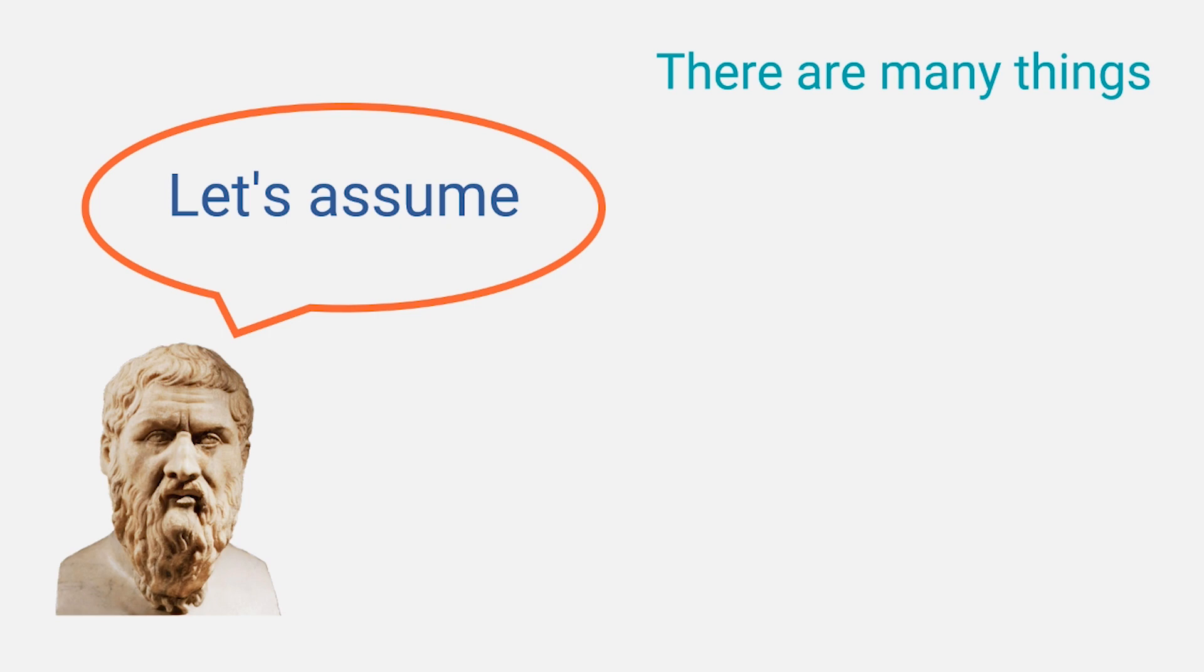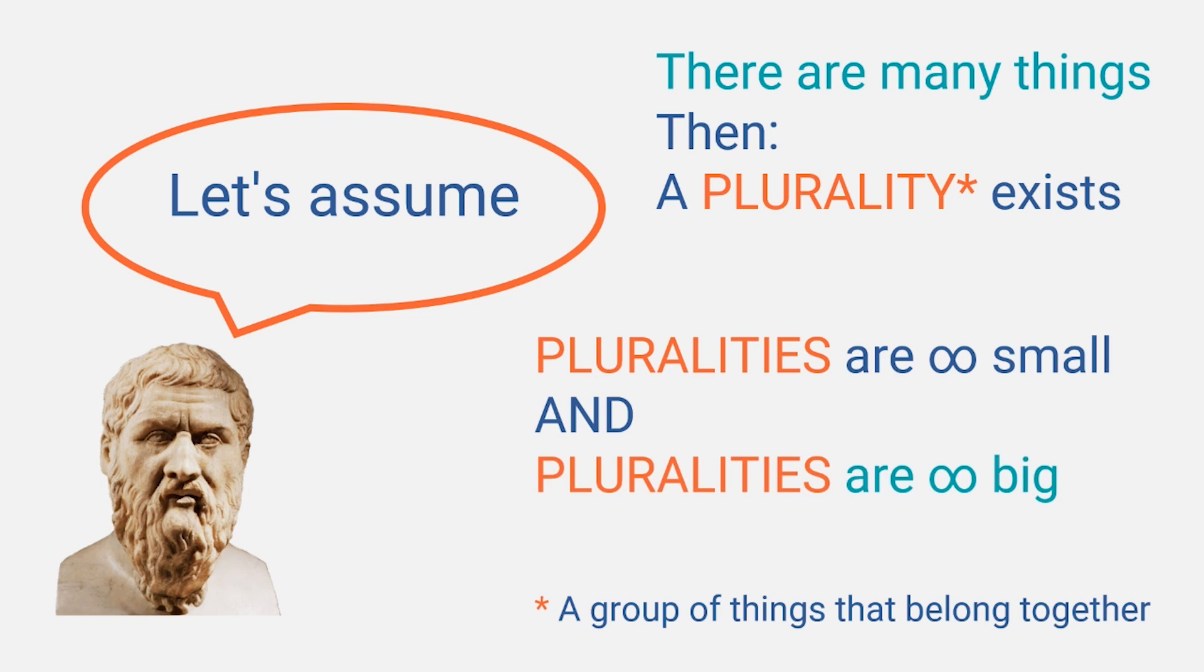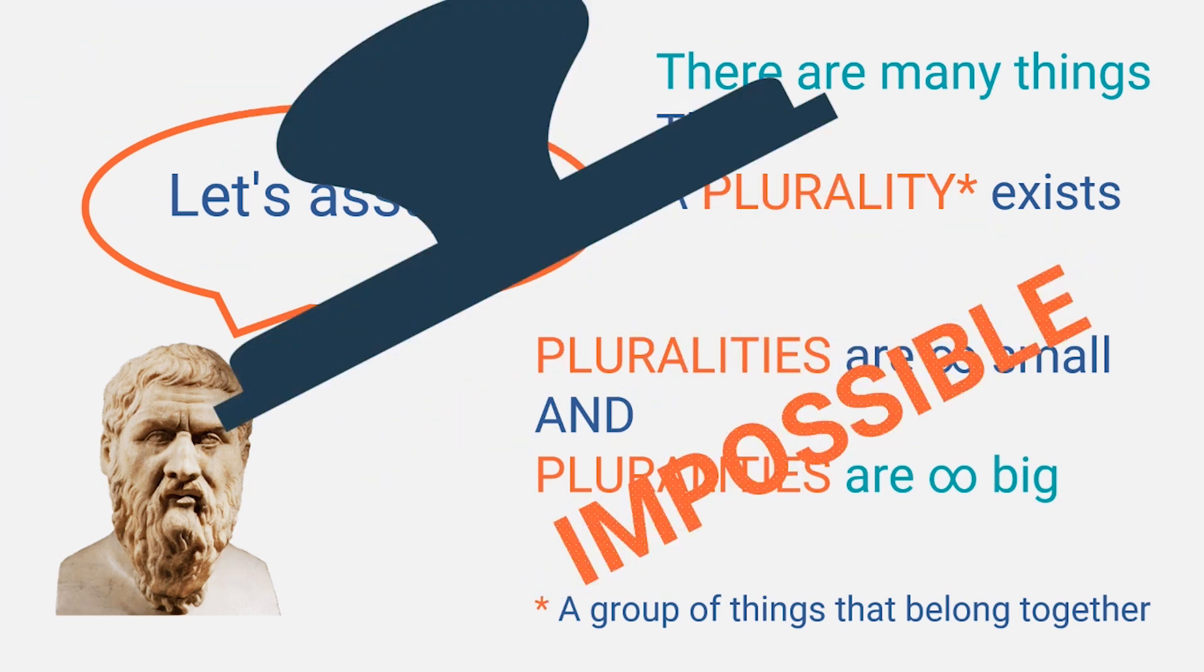Another way in which Zeno tried to argue this is by arguing that if there are many things, there is such a thing as a plurality. A plurality is a group of things that belong together. His arguing goes that, regarding any plurality, that plurality has to be both infinitely small and infinitely large at the same time. Therefore, pluralities cannot exist.